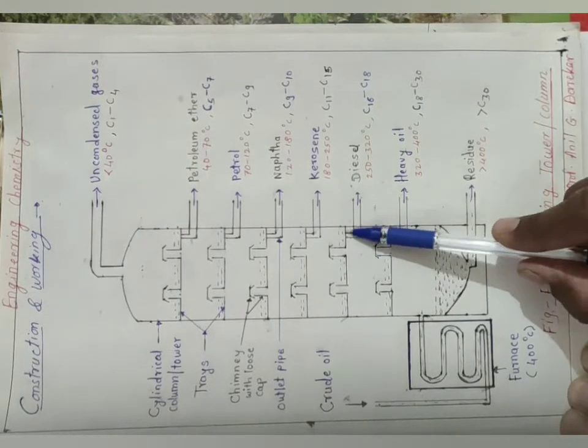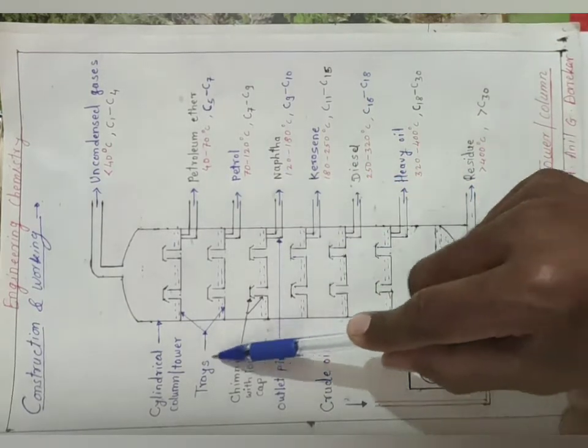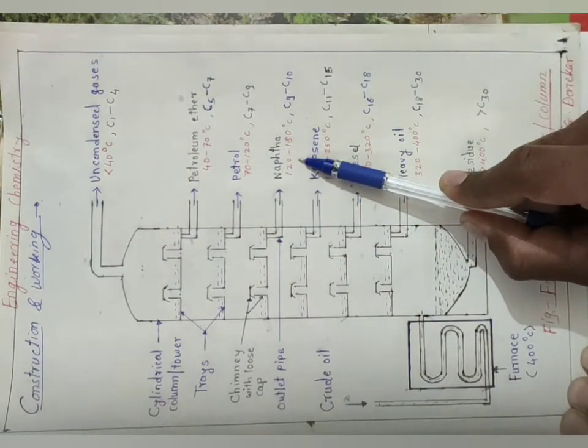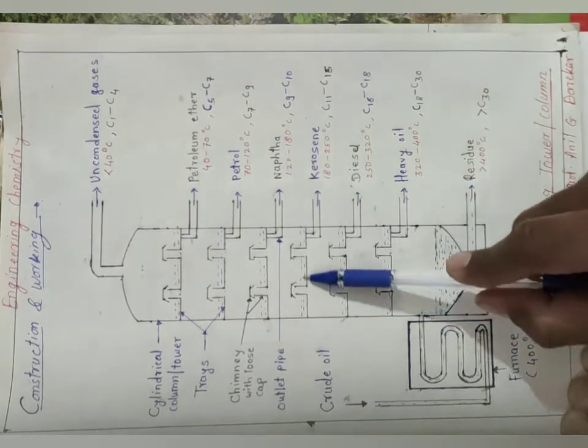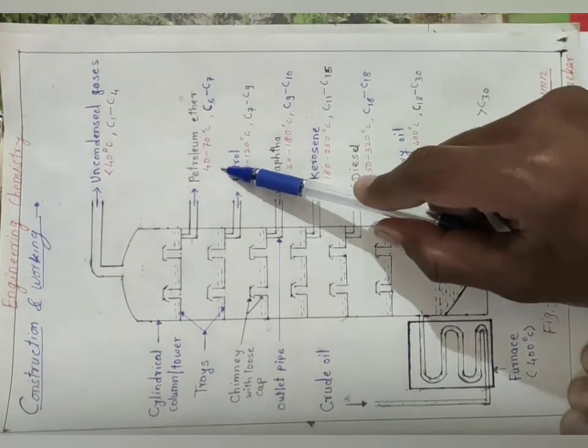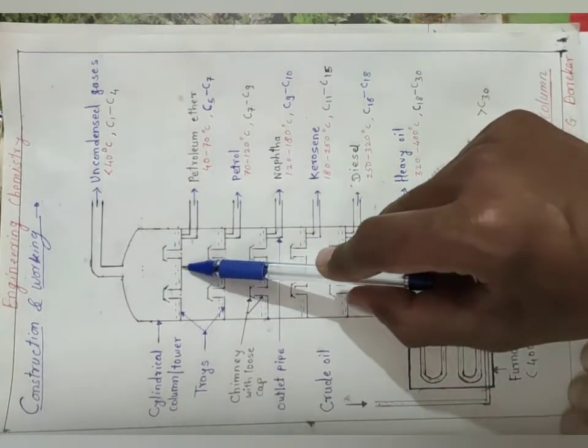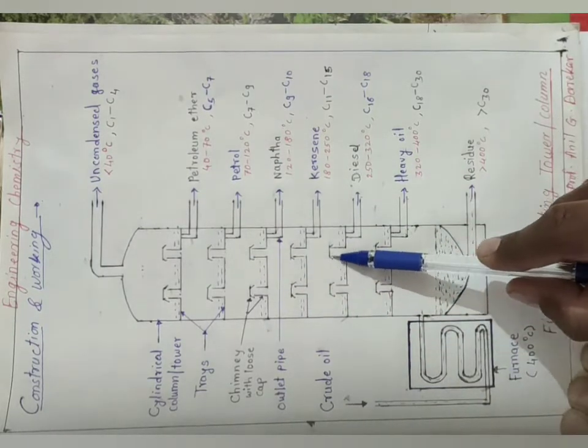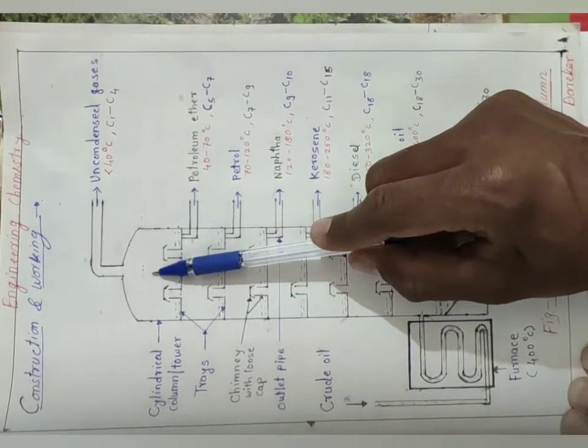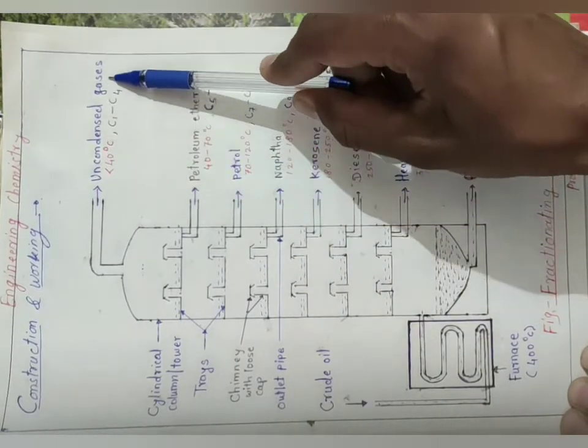As I said in the principle: at the lower portion, higher boiling point compounds get condensed, and at upper portion, that is the top portion, lower boiling point compounds condense. So simply you keep in mind, lower boiling point requires less time, so it gets condensed at the top, while higher boiling point compounds get condensed at the bottom. Some vapors are not getting condensed because the boiling point is very, very low, so it does not get condensed. That one gets collected as it is, that is called uncondensed gases.